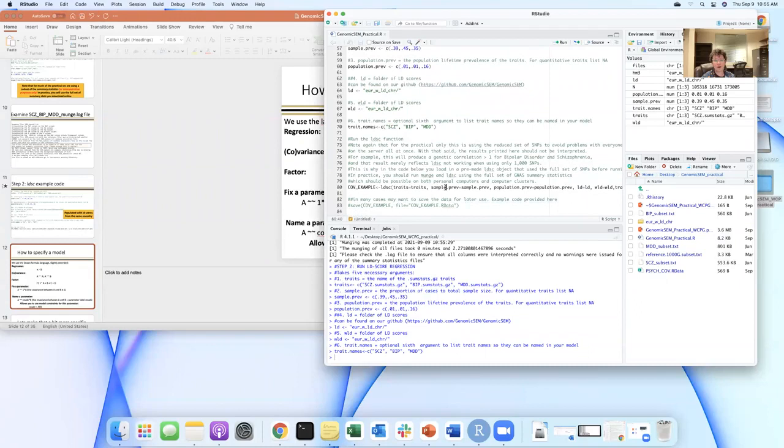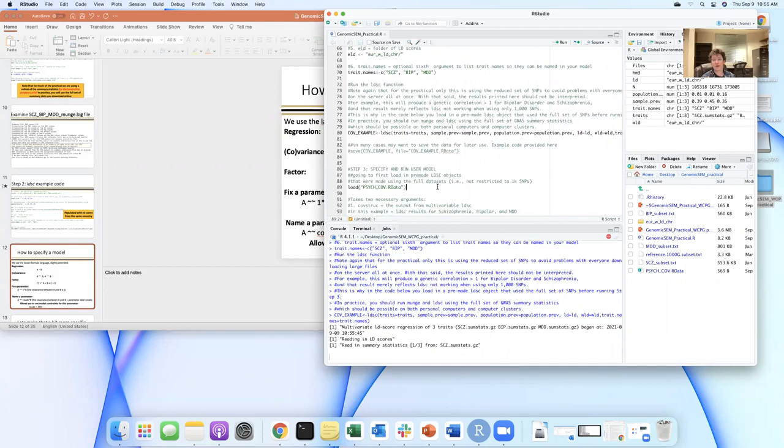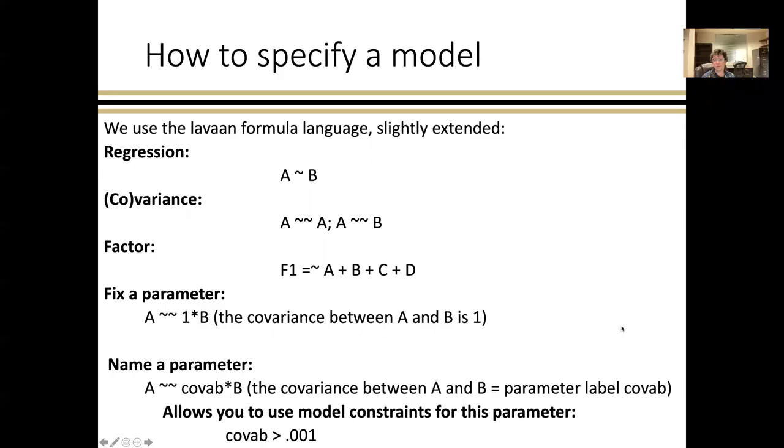This is going to produce results that are not actually interpretable because we use that subset of 10,000 SNPs. So when we now go on to step three of running the model, I've created an LD score regression object that uses the full set of summary statistics that we're now going to load in so you can actually produce interpretable results in the context of the model. We're going to load that in and now switch back over to the PowerPoint to talk about how you specify a model in genomic SEM.